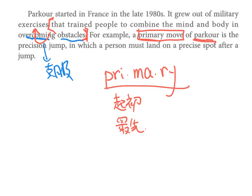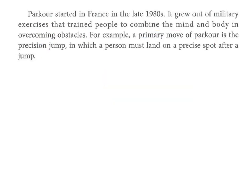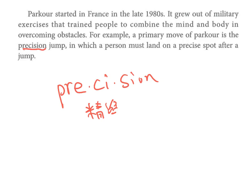a primary move，primary切一下音节，primary就是起初的、最先的意思。最先的一个运动，跑酷最早期的运动是什么呢？是precision jump，precision这个单字的意思叫做精准，就是精准的跳。in which开始补充说明这种精准的跳是什么意思。